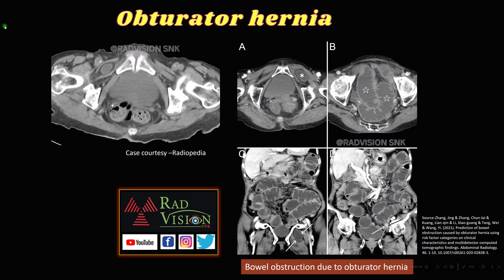Next, here you can see herniation of the small bowel loop between the obturator internus and pectineus muscle — this is called obturator hernia. Here also there is obturator hernia but with obstruction — this is bowel obstruction due to left-sided obturator hernia.